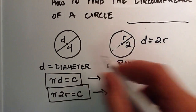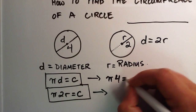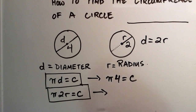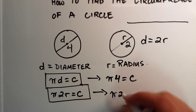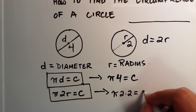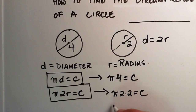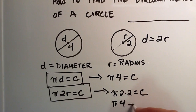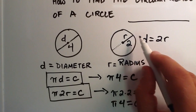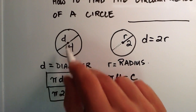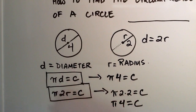So pi times d — d is 4 — equals c, the circumference. And here we have pi times 2 times r. Well, r is equal to 2, so pi times 2 times 2 equals the circumference. And 2 times 2 equals 4, so pi times 4 equals c. So whether you're using the radius or the diameter and you plug it into the corresponding equation, you find out the circumference of the circle and you get the exact same result.